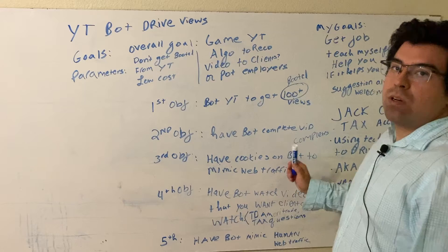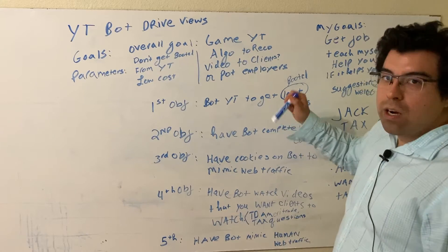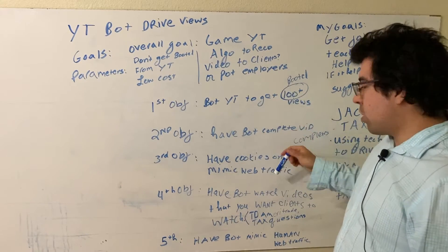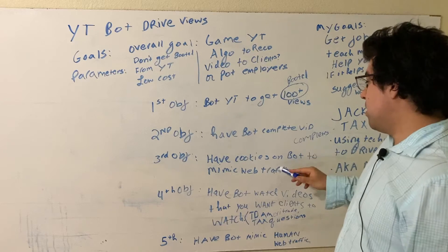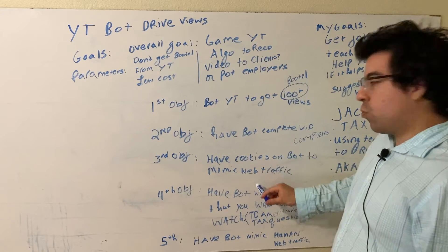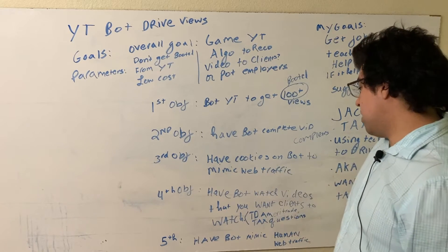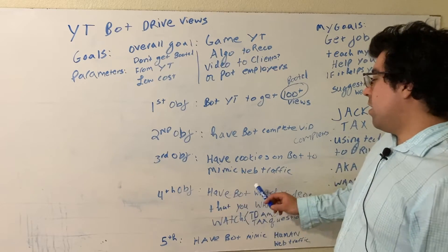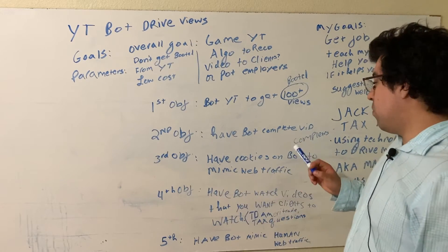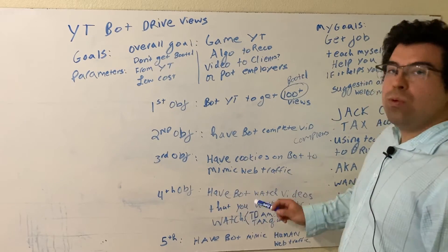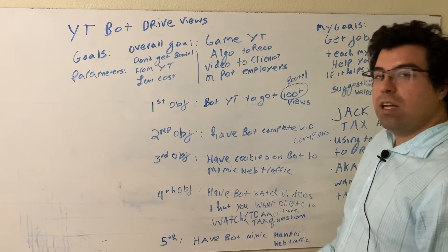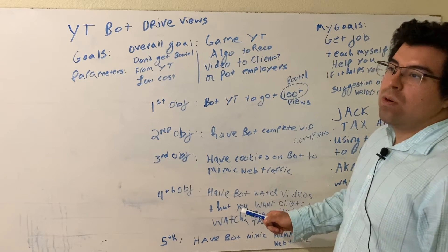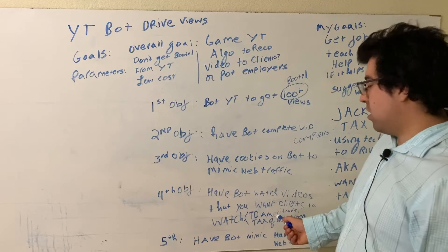The third objective: if we can mimic cookies, as the bot goes around the internet it mimics all the web traffic. You want to mimic web traffic. Our fourth objective is to have the bot watch videos that you think your potential clients watch — have it watch what you think the bot watches.